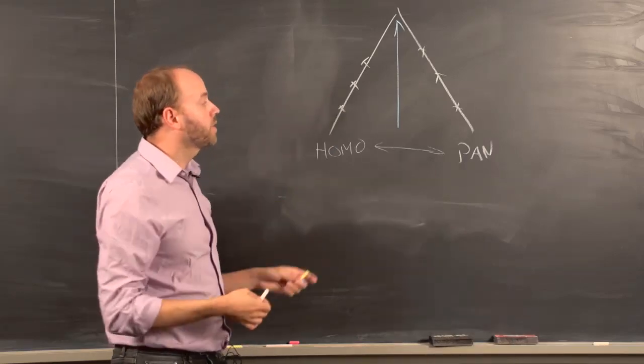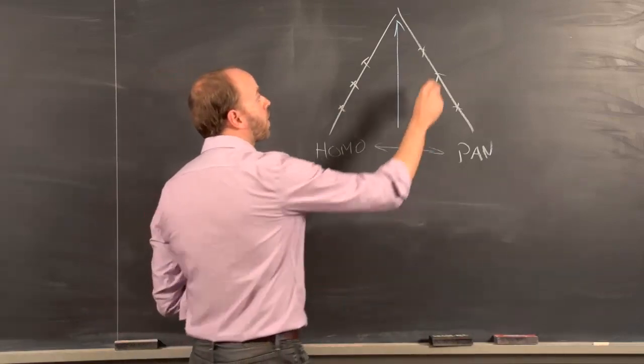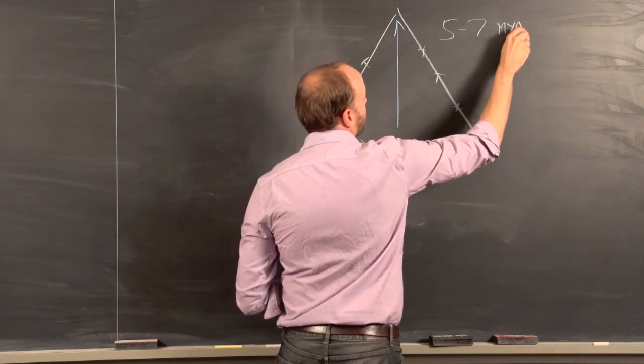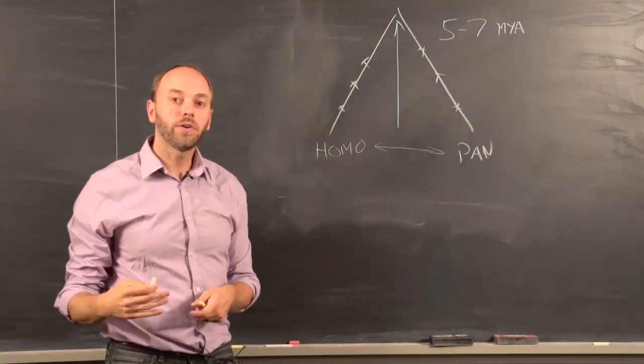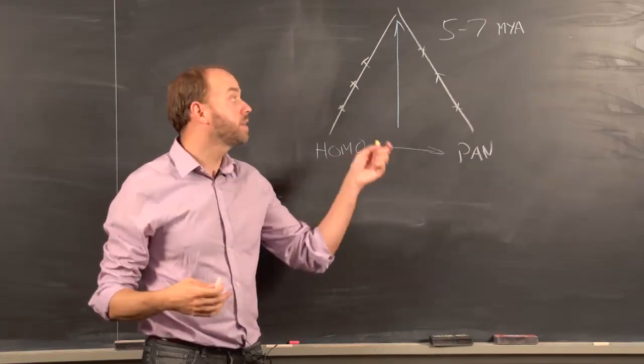Now, the current understanding of this relationship is that that last common ancestor was something on the order of 5 to 7 million years in the past. Meaning that if we wanted to find evidence for the earliest hominin, the kind of sediments we'd want to look in are ones that are dated to this time period.